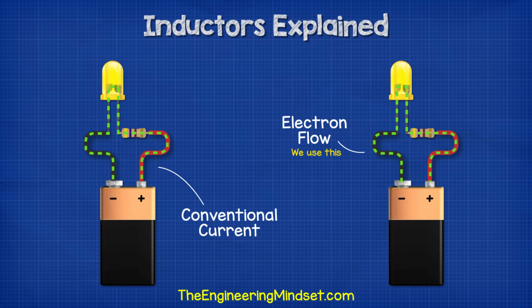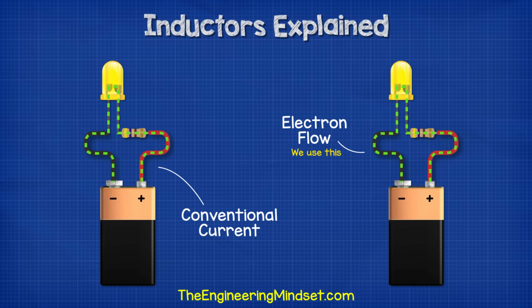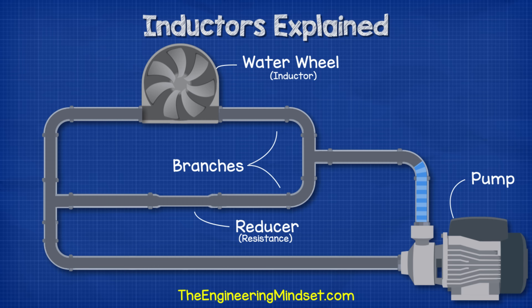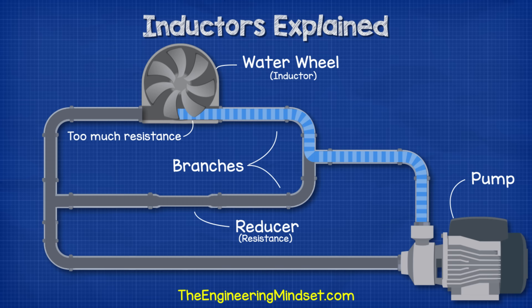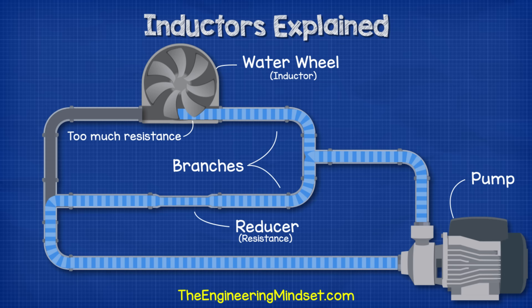This is just like when electrons leave the battery — they flow and try to get back to the other side of the battery. In these animations I use electron flow, which is from negative to positive, but you might be used to seeing conventional flow, which is from positive to negative — just be aware of the two and which one we're using. As the water flows it reaches the branches and has to decide which path to take. The water pushes against the wheel, but the wheel is going to take some time to get moving, so it's adding a lot of resistance to the pipe, making it too difficult for the water to flow through this path. Therefore the water will instead take the path of the reducer because it can flow straight through this and get back to the pump much easier.